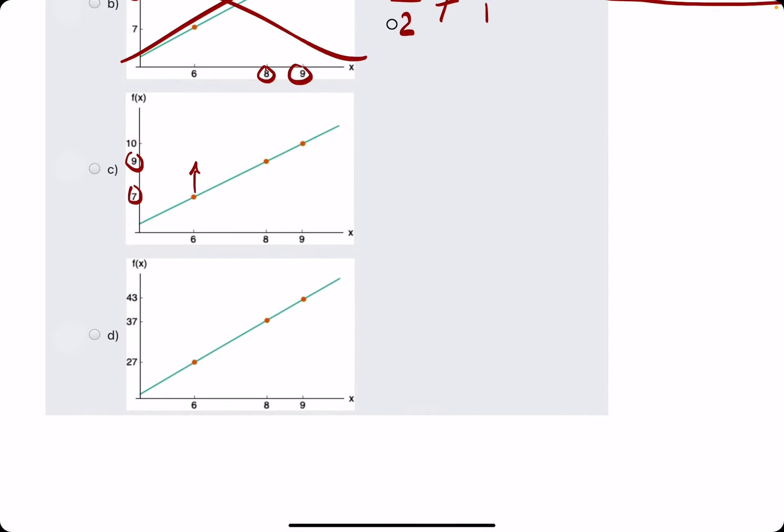So 7 to 9, rise over run would be 7 to 9 is 2. And then 6 to 8 is also 2. So we get a slope of 1.